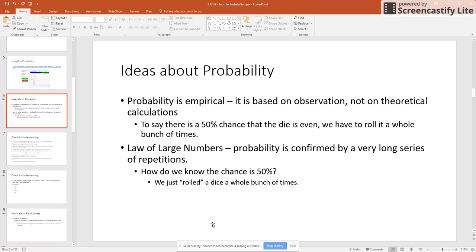So probability is empirical. By that we mean that it's based on observation, not on theoretical calculations. If I wanted to say that there's a 50% chance that I'm going to roll a die and it's going to give me an even number, then I have to roll a die a whole bunch of times and make sure that that actually is really going to happen. I can't just assume that.